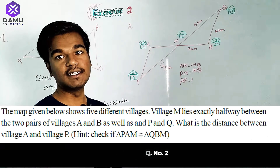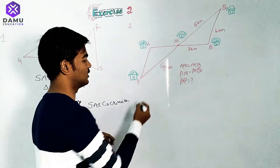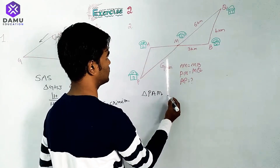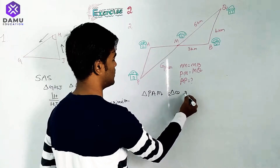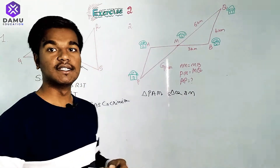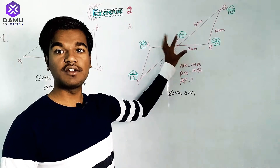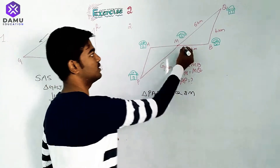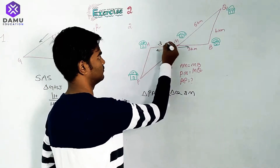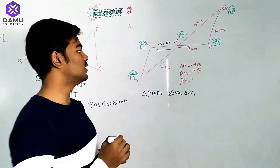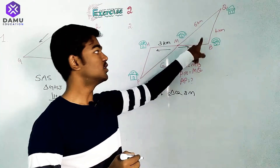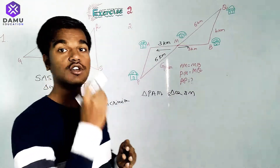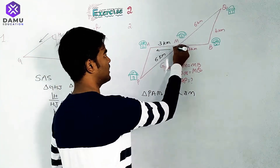We consider triangles PAM and QBM. M is located at the midpoint, so BM equals AM equals 3 kilometers. It is also given that PM equals QM equals 6 kilometers.